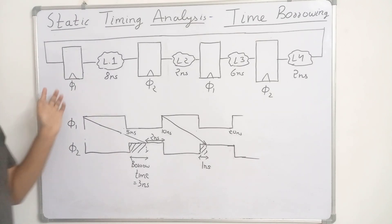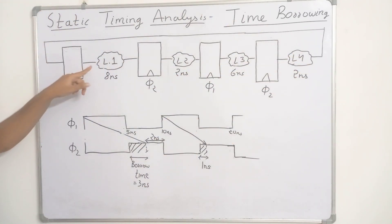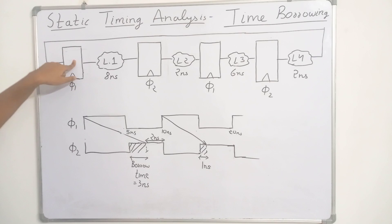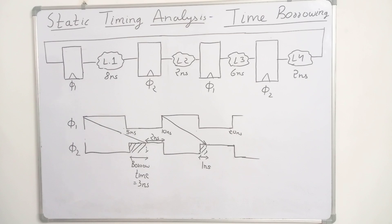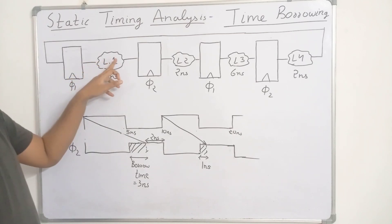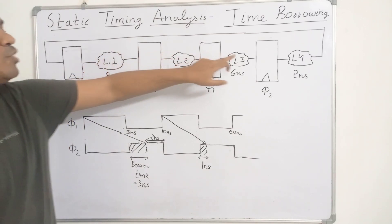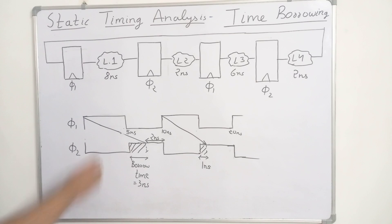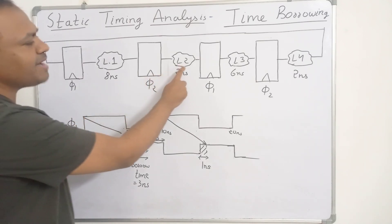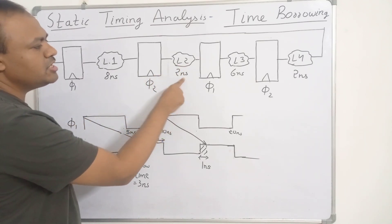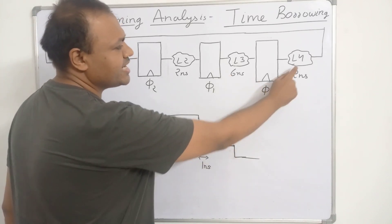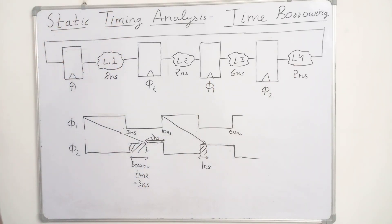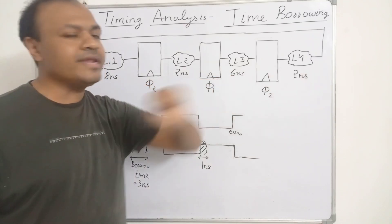This is our circuit. It consists of four storage elements and combinational logic paths L1, L2, L3, and L4. The path L1 has a delay of 8 nanoseconds, L2 has a delay of 2 nanoseconds, L3 has a delay of 6 nanoseconds, and L4 has a delay of 2 nanoseconds.